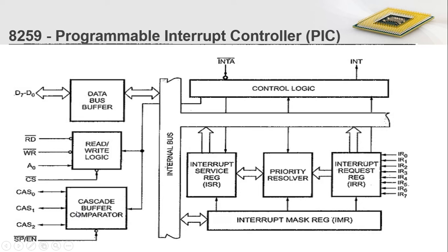There is one more unit: the cascade buffer comparator. This comes into action only when multiple 8259 units are interconnected to form a single integrated unit — that is, if more 8259 units are interconnected to accept more interrupt requests, then this cascade buffer comparator comes into action. Using a single 8259 IC we can handle 8 interrupt requests, but if we want to extend this limit and handle more, we can integrate more 8259 ICs. A maximum of eight 8259 ICs can be integrated, supporting up to 64 different interrupt requests.